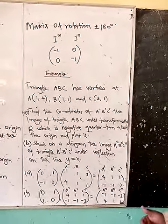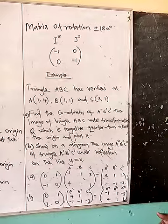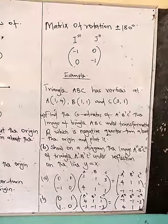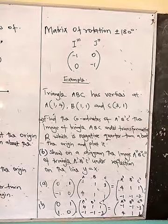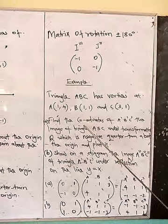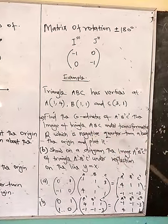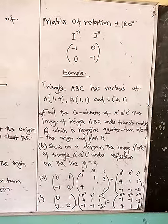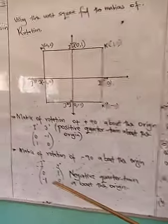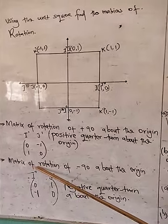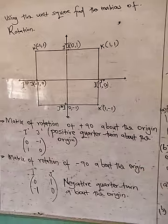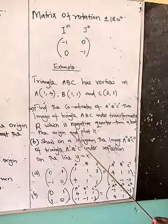In our previous lesson, we learned how to obtain these various matrices. First, we identify the matrix. For Part A, the matrix that represents a negative quarter turn about the origin is the rotation matrix for negative 90 degrees about the origin — that is the matrix we use here.